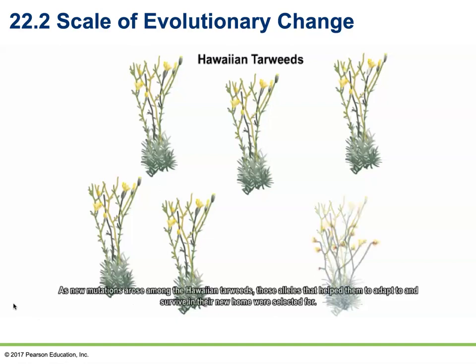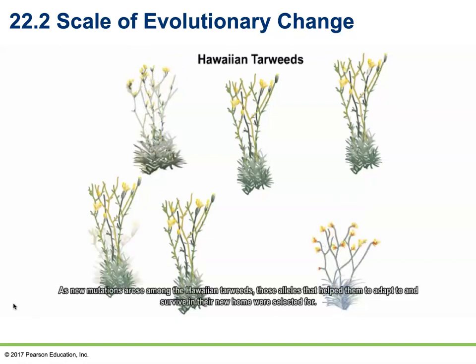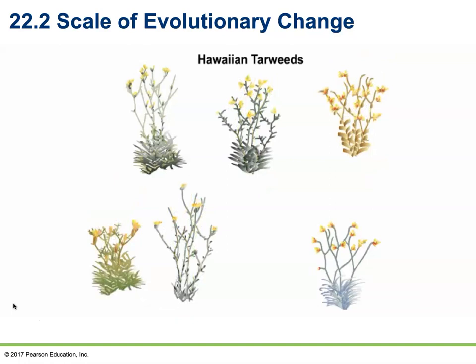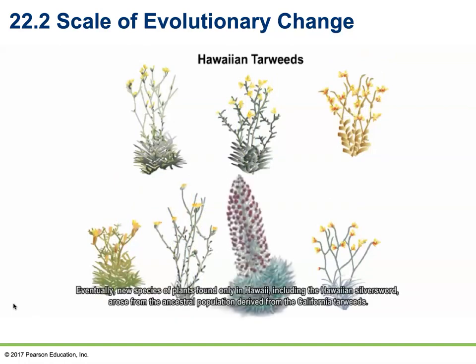As new mutations arose among the Hawaiian tarweeds, alleles that helped them adapt to and survive in their new home were selected for. Eventually, new species found only in Hawaii — including the Hawaiian silversword — arose from the ancestral population derived from the California tarweeds.